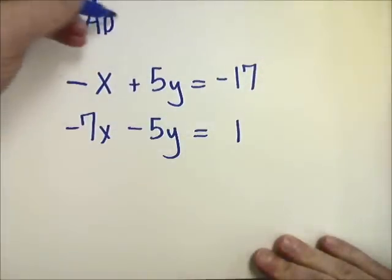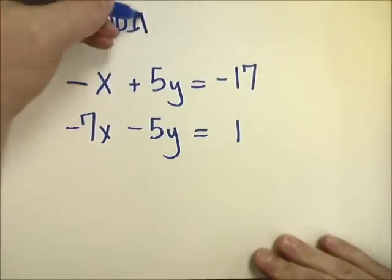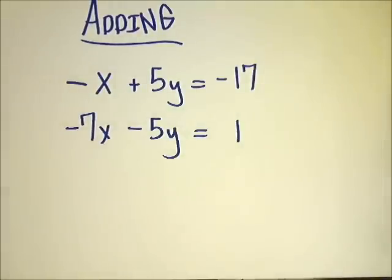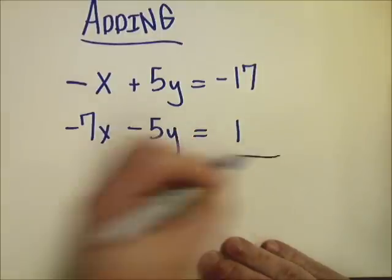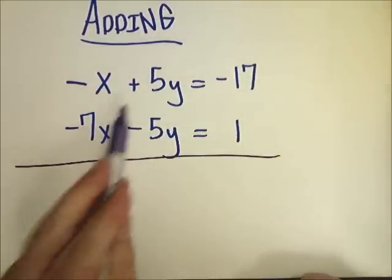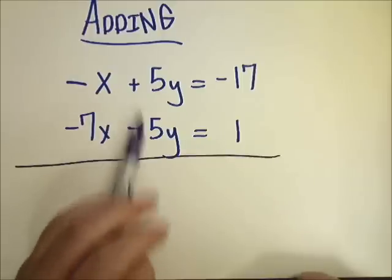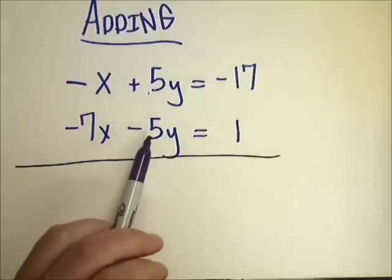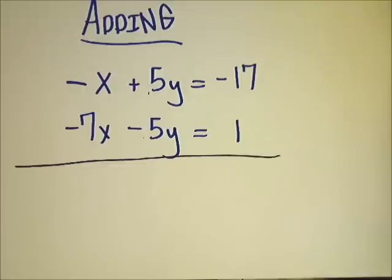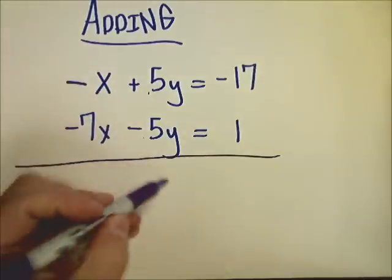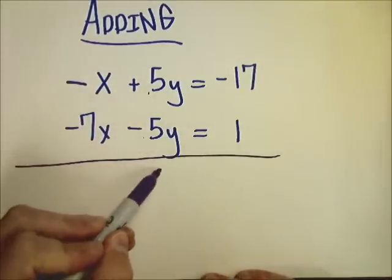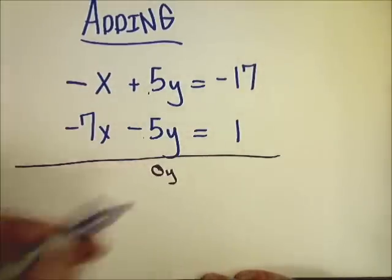So we're going to call this elimination with adding. In this case, you do it generally when you see the same number in front of one of the letters, so there's a 5y and a negative 5y. As long as one's one sign and one's the other, then you could totally eliminate that term just by adding them together. Because 5 minus 5 is 0, so when I do 5 minus 5 gives me 0, I'll have no y's left, which means I can eliminate it.